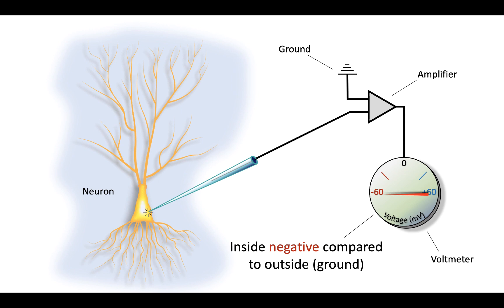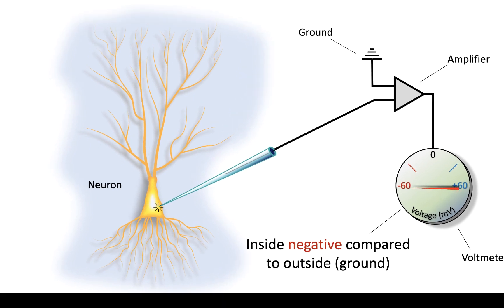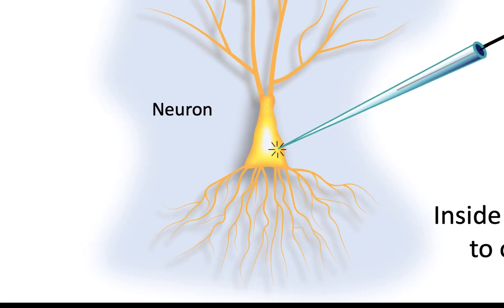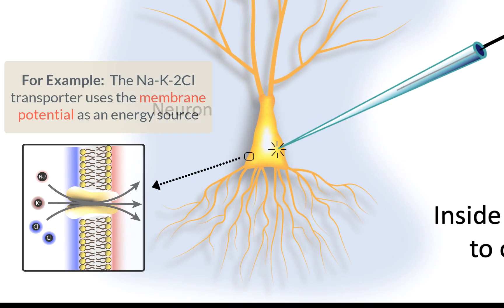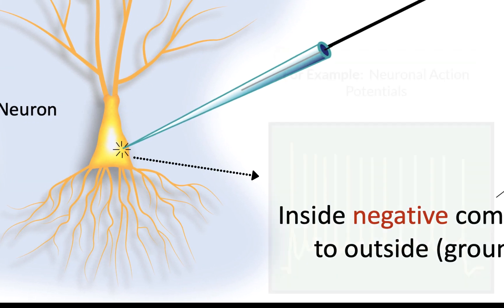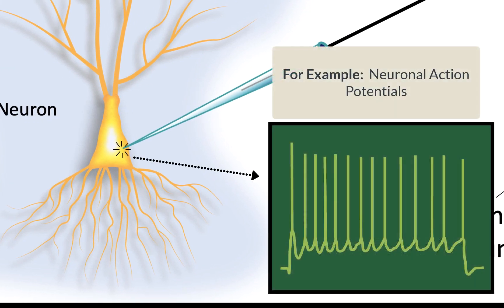Membrane potential is a fundamental feature of all living cells. All cells have a membrane potential, and that membrane potential is used as a source of potential energy to perform work, very often in the form of membrane transport. For a special group of cells called excitable cells, the membrane potential can be changed for the purpose of signaling or changing function.